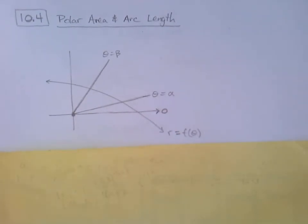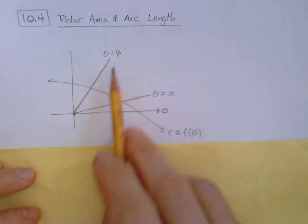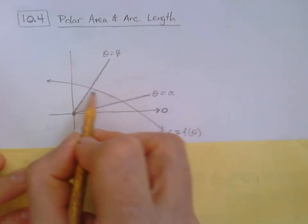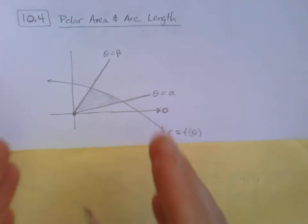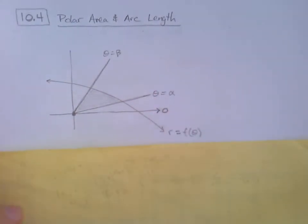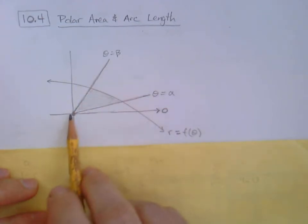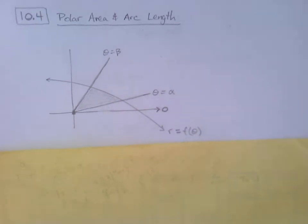We'd like to find the area between two angles, starting at theta equals alpha and ending at theta equals beta. In regular Cartesian coordinates you always have a starting and ending x value making vertical lines with space in the middle, but in polar it all comes out of the pole — you go from angle alpha to angle beta, making an arc-like triangular shape. So how do we tie this in to what we're familiar with on the xy plane?